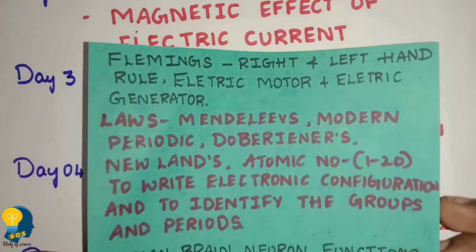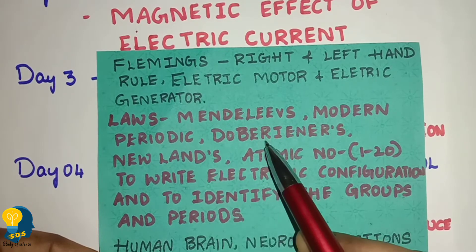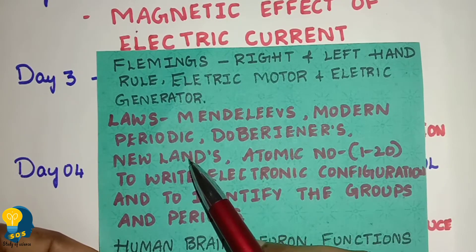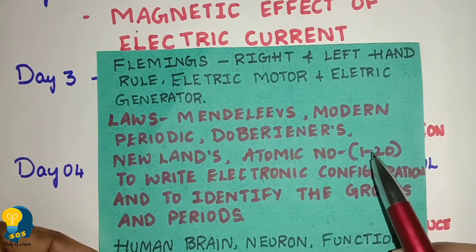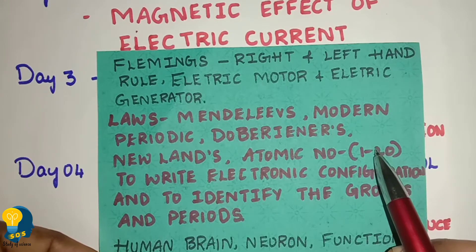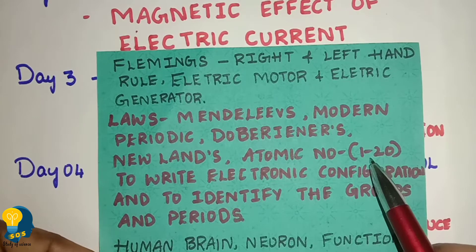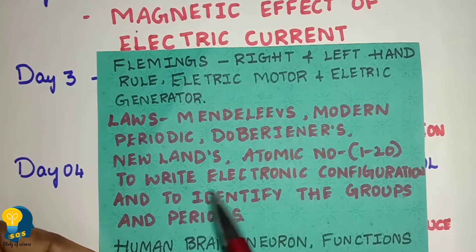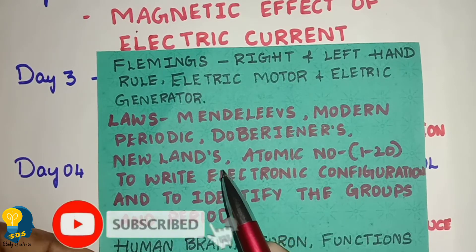In Periodic Classification of Elements, you need to memorize elements 1 to 20: sodium, magnesium, aluminum, silicon, phosphorus, sulfur, chlorine, argon, potassium, calcium. This is very easy with practice. Practice elements 1 to 20 with their names and atomic numbers, and you can easily identify groups and periods. Practice Periodic Classification of Elements thoroughly.